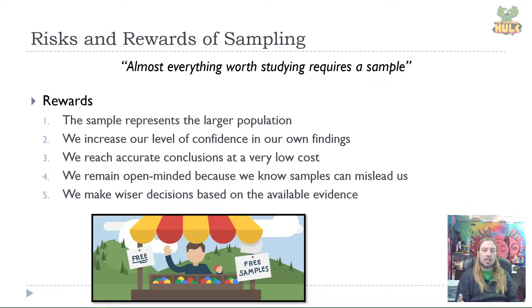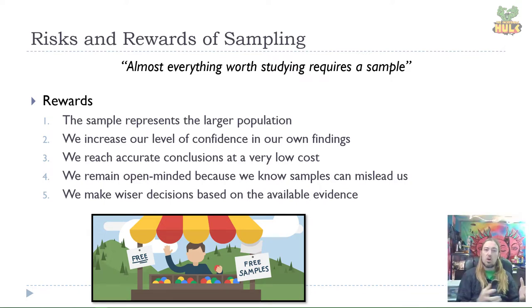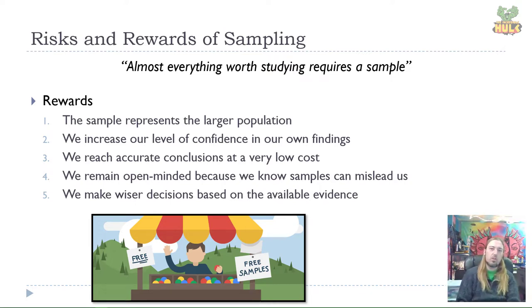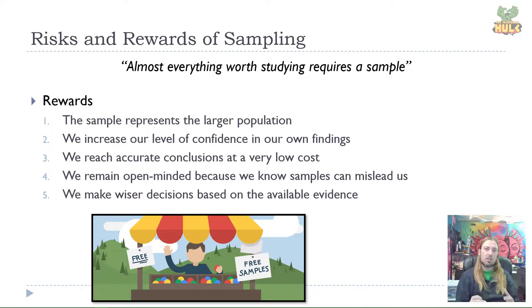Assuming we sample correctly — and that's the point of this lecture — we can be sure that the sample represents the larger population. We can have greater confidence in our findings. Our conclusions about the population are reached at a fairly low cost because we sampled instead of studying the whole population. But because we're sampling, we also remain open-minded about the fact that it might still not be perfectly representative. We maintain a healthy degree of scientific skepticism that allows us to keep an open mind. Ultimately, properly sampling will lead to making wiser decisions based on available evidence — scientific-based decision making.